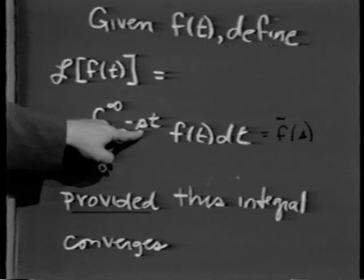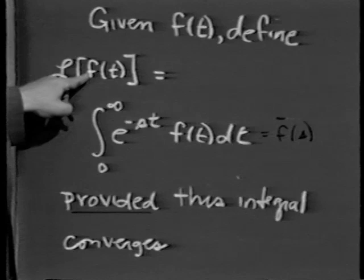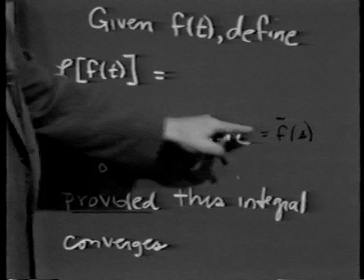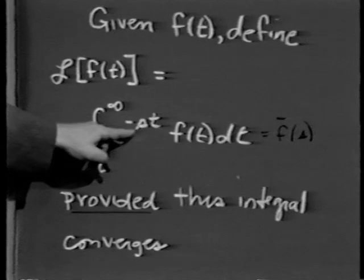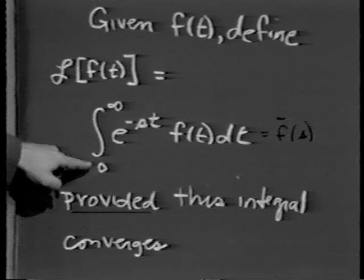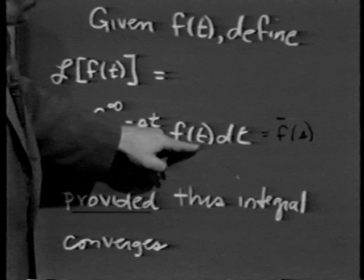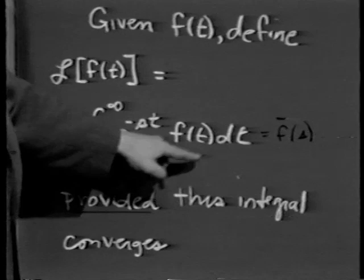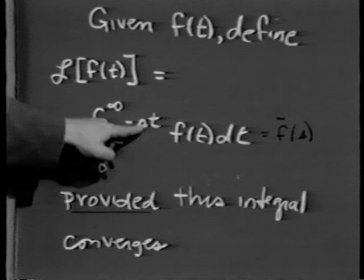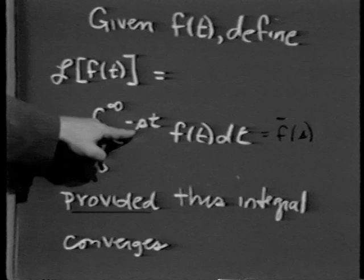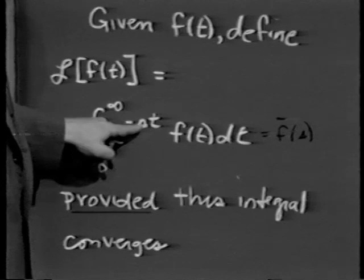Pictorially, this is an area under a curve. If the Laplace transform of a function exists, the area under the curve as t goes from 0 to infinity is finite. If this area is finite for one value of s, replacing s by something larger makes e to the minus st go to 0 even faster. Consequently, the area under the curve will exist for all values of s beyond a certain value once it exists for that one value.